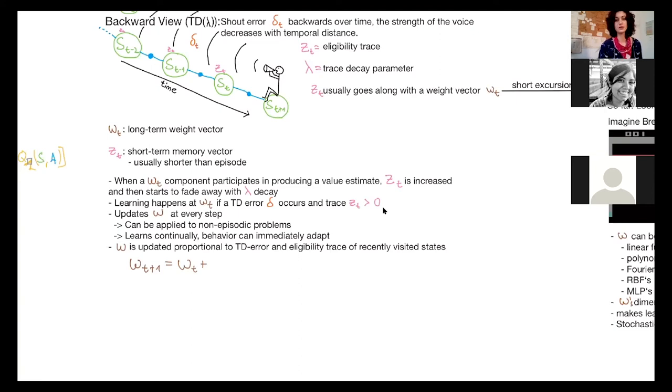And learning happens then, when at WT a TD error occurs and the eligibility trace is bigger zero. So we will make updates on the weight vector at every step. And this eligibility trace idea can be applied to non-episodic problems. And learning can happen continually and behavior can immediately adapt. And there's even some evidence in neuroscience that there might be something like eligibility traces used on the neuronal level. And I think eligibility traces were even inspired by some properties of synapses.